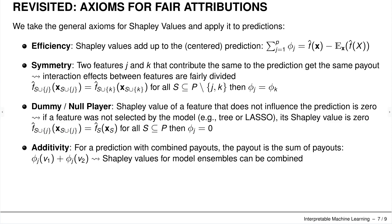Additivity means that for predictions with combined payouts the payout is the sum of individual payouts. This is nice in the machine learning context because for model ensembles such as boosting or bagging — for example random forests — we can easily combine the Shapley values from the different base learners.